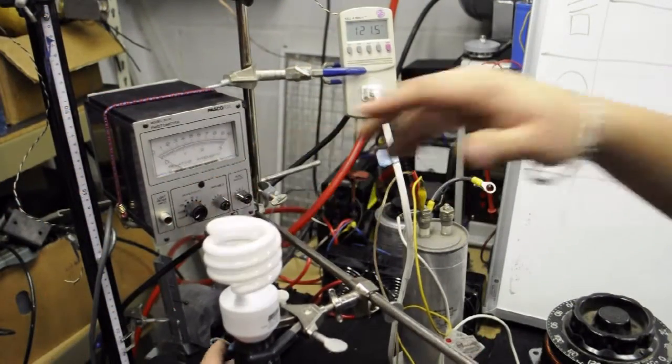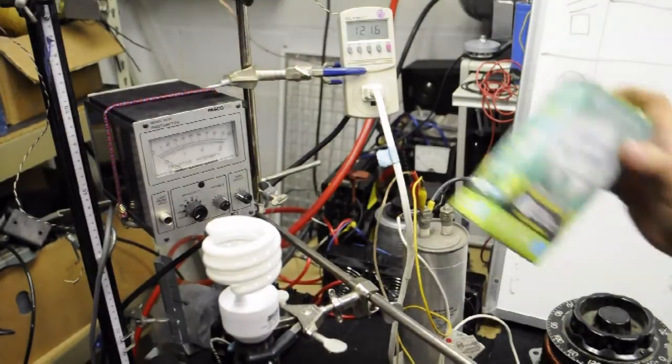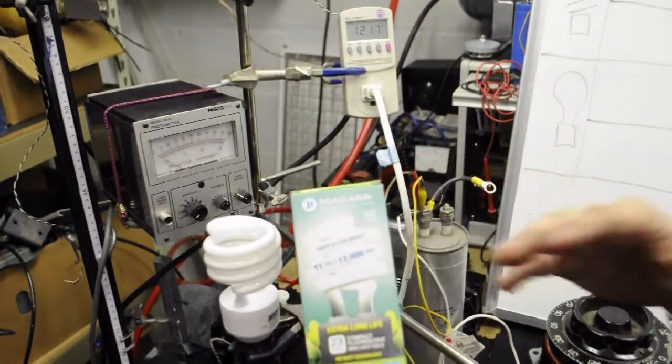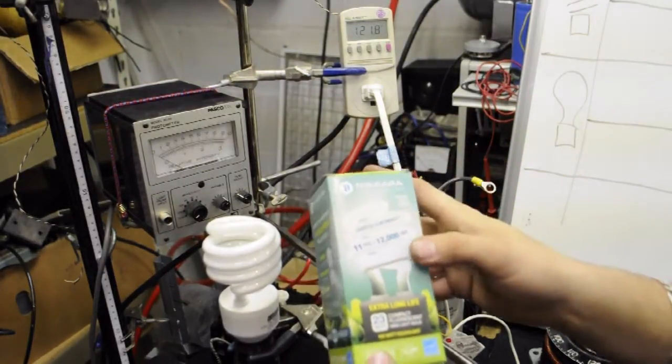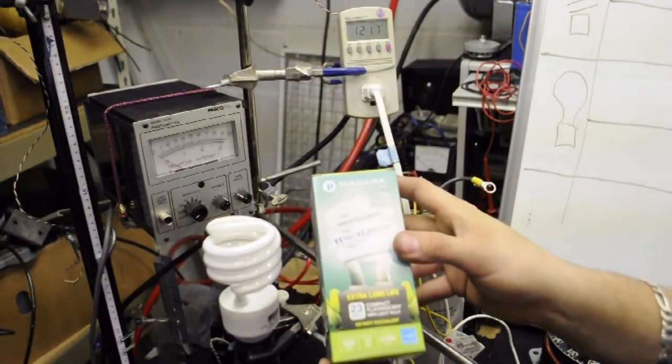All right, so let's get started here. This is the CFL sent to me by my power company as part of their energy saving initiative. This bulb is a 23 watt use and it claims to be a 100 watt equivalent.